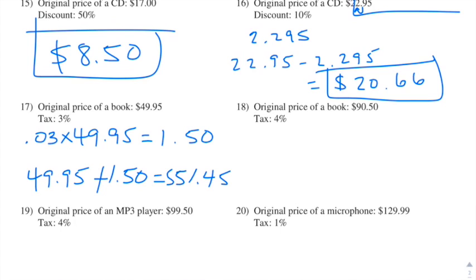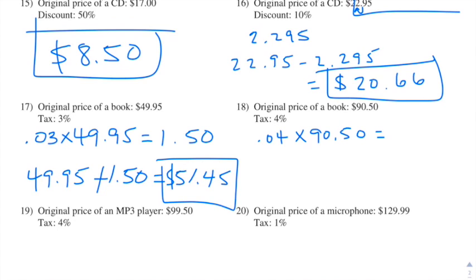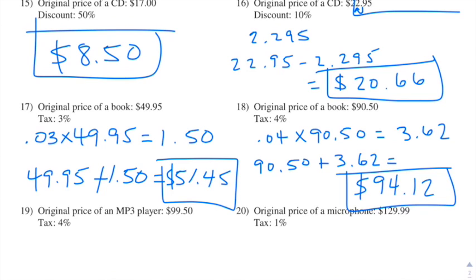Number eighteen: the original price of a book is $90.50 and the tax is 4%. So we do 0.04 times 90.50 and we end up getting $3.62. We add $90.50 plus $3.62 and we end up getting $94.12. That's our final answer.